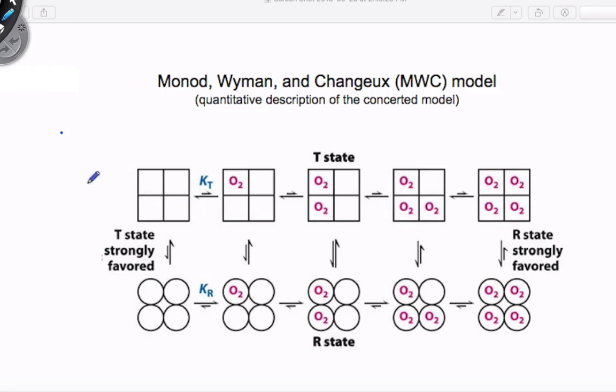And when there is no substrate, it's like 99% T and then 1% R. Or you could think of it as the probability of observing it in the T state is 0.99 and 0.01 of observing it in the R state.